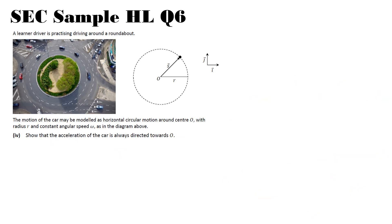So part four, show that the acceleration of the car is always directed towards O. So this one is probably the trickiest. So the first thing we need to understand is they're asking us about acceleration. So when we talk about rates of change, we have S for displacement, differentiate that gets V, differentiate that again and we get A.